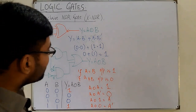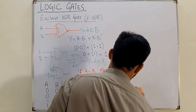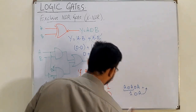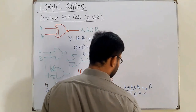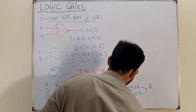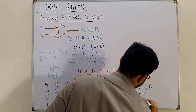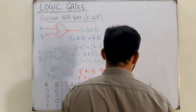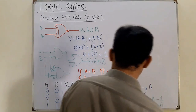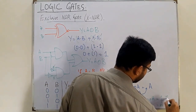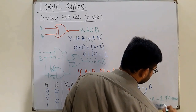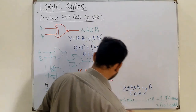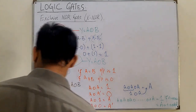For repeated XNOR operations: A XNOR A XNOR A repeated n times — the result is 1 if n is even, and A if n is odd. For example, A XNOR A = 1, then 1 XNOR A = A for three repetitions. This generalizes the pattern for any number of repeated XNOR operations.